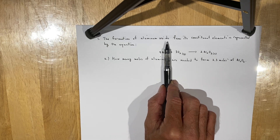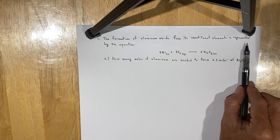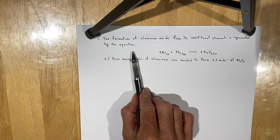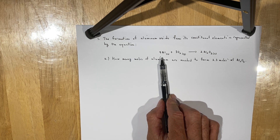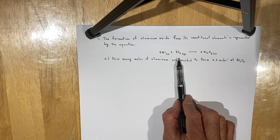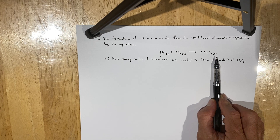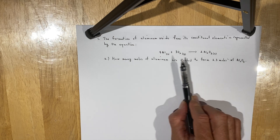The formation of aluminum oxide, Al₂O₃, from its constituent elements is represented by the equation: four moles of aluminum solid react with three moles of oxygen gas to produce two moles of aluminum oxide, which is also a solid.